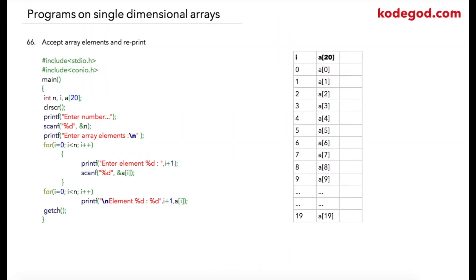Now we are going to check a few programs on single dimension arrays. In this program we are going to accept an array from the user and simply reprint it. These are our header files. This is our main array which we are going to use to store values and reprint it. 'i' will be my index variable and 'n' is the number of array elements.